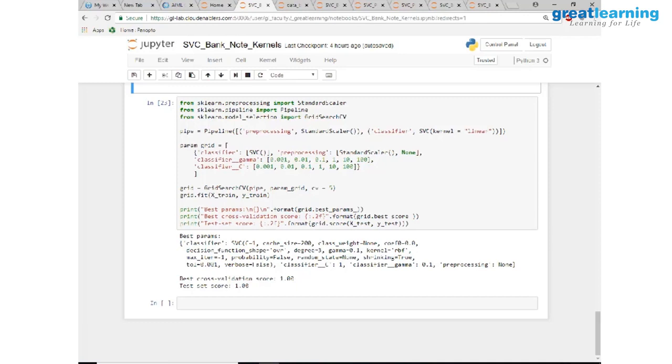Going with point estimates is a disaster. You should always go with range estimates and the range should not be too wide. It should be within certain limits. That is where we come to what is called bootstrap sampling. In bootstrap sampling what happens is, have you heard of this bootstrap sample?